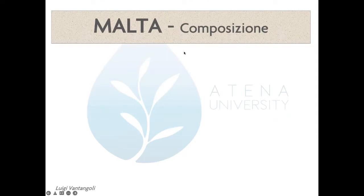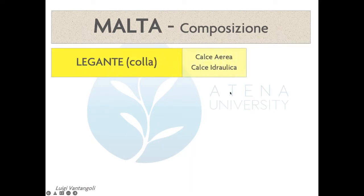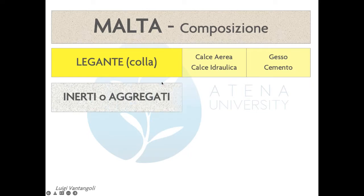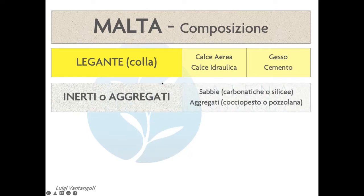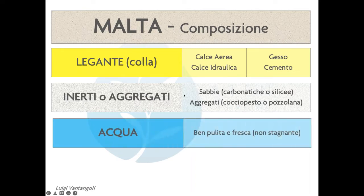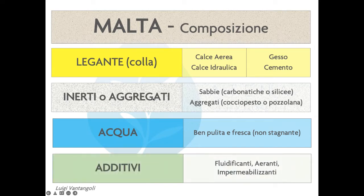Partiamo dal concetto di malta per intonaco: la composizione è un legante — cioè la colla — in questo caso leganti minerali: calce idraulica, gesso e cemento. Poi inerti o aggregati; gli aggregati hanno un'interazione chimica con il legante, in particolar modo con il grassello di calce. Infine l'acqua, ben pulita e fresca, nel dosaggio giusto, e additivi, perché le malte contemporanee che troviamo sul mercato contengono sempre una piccola percentuale di additivi per agevolare la posa in opera.